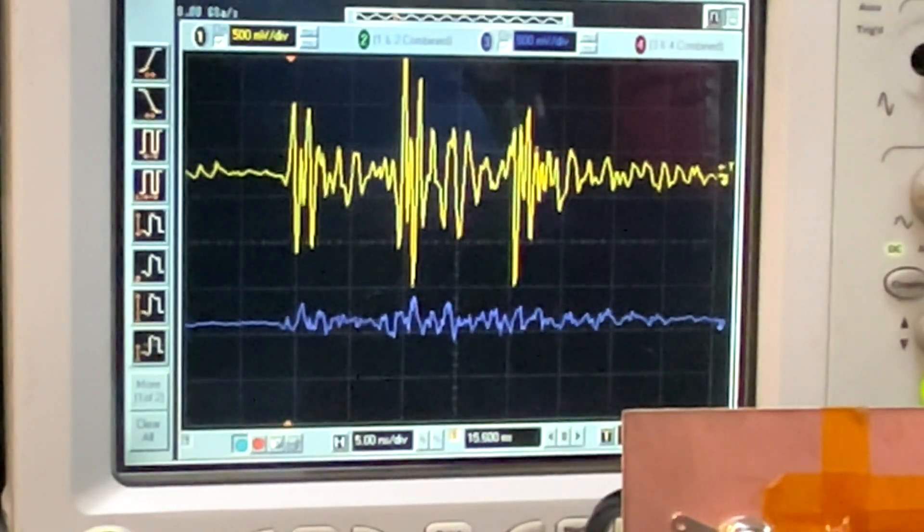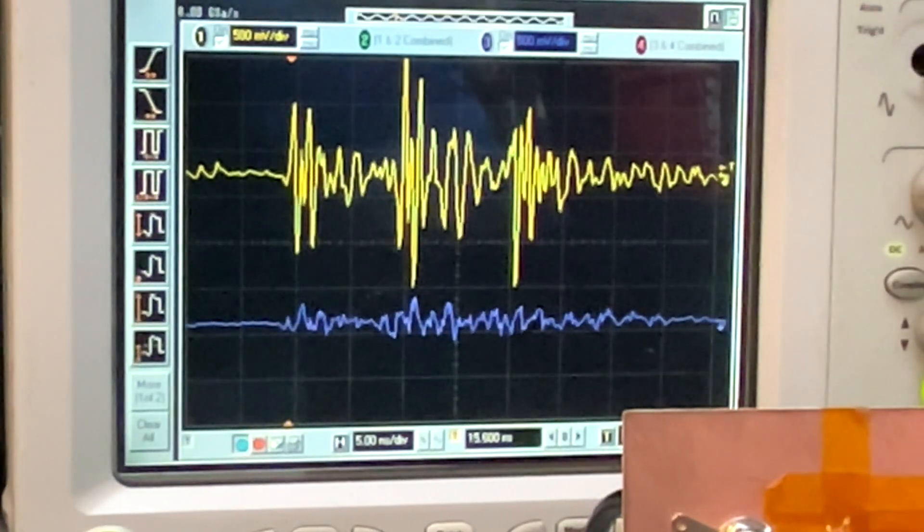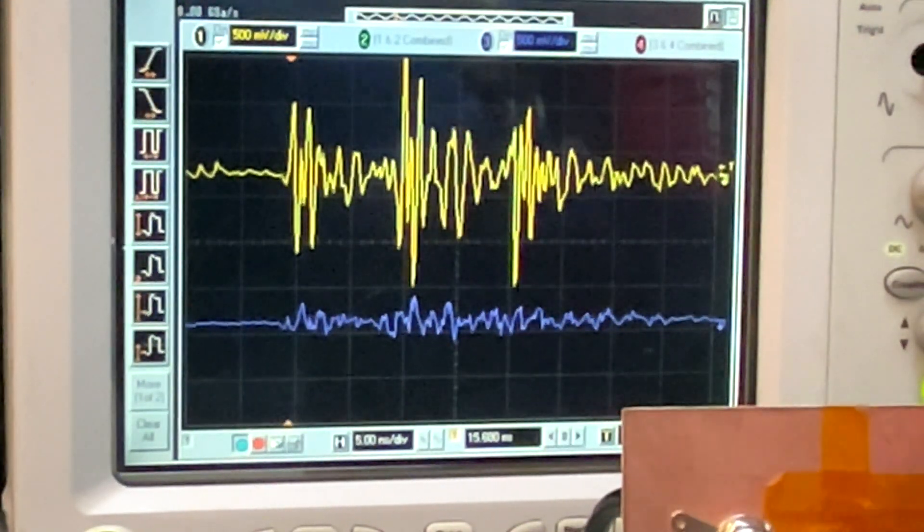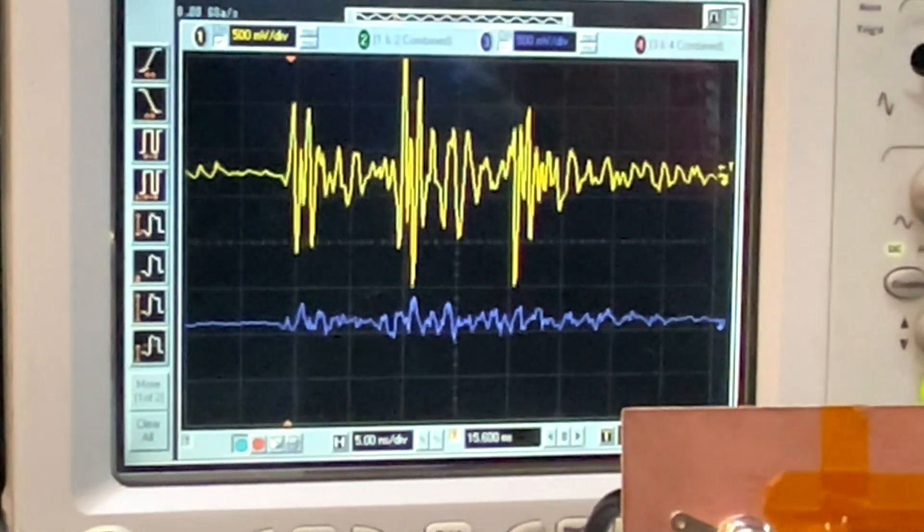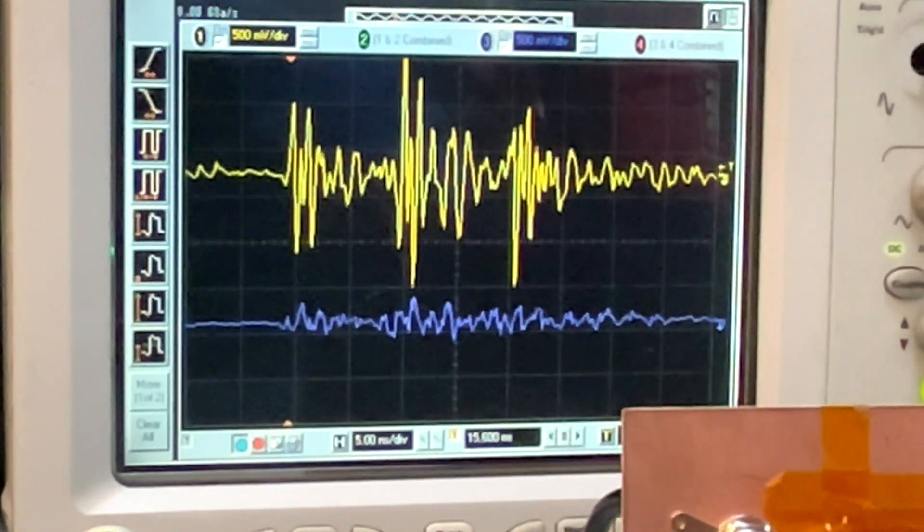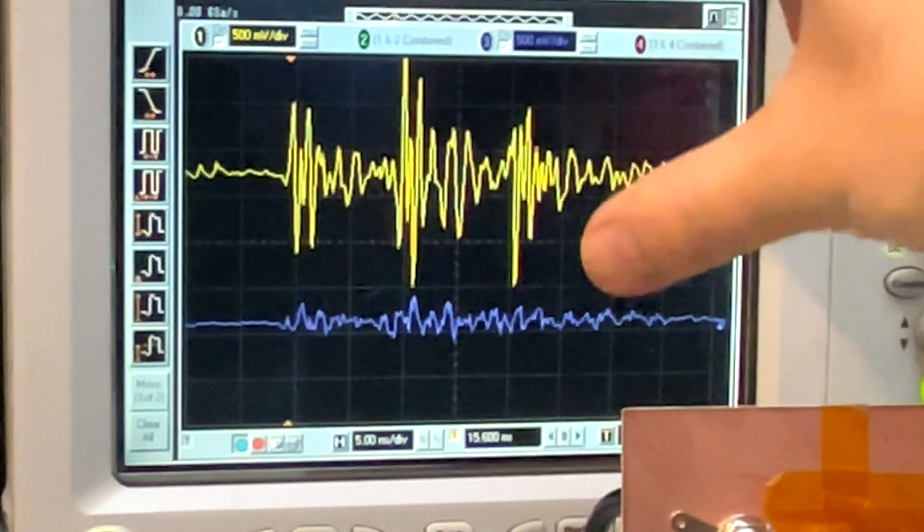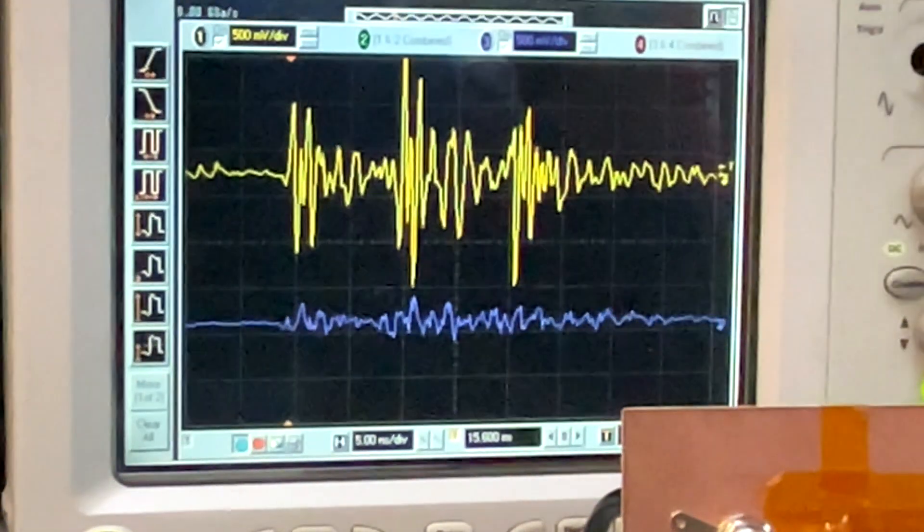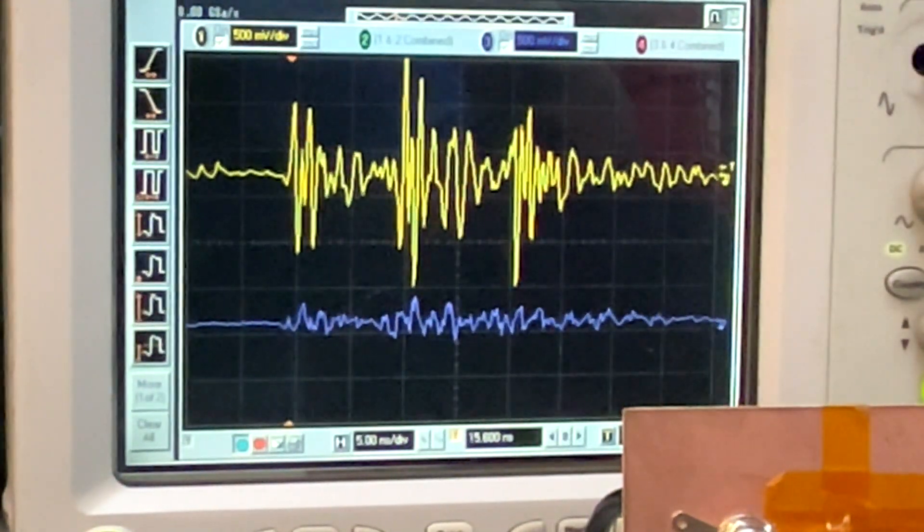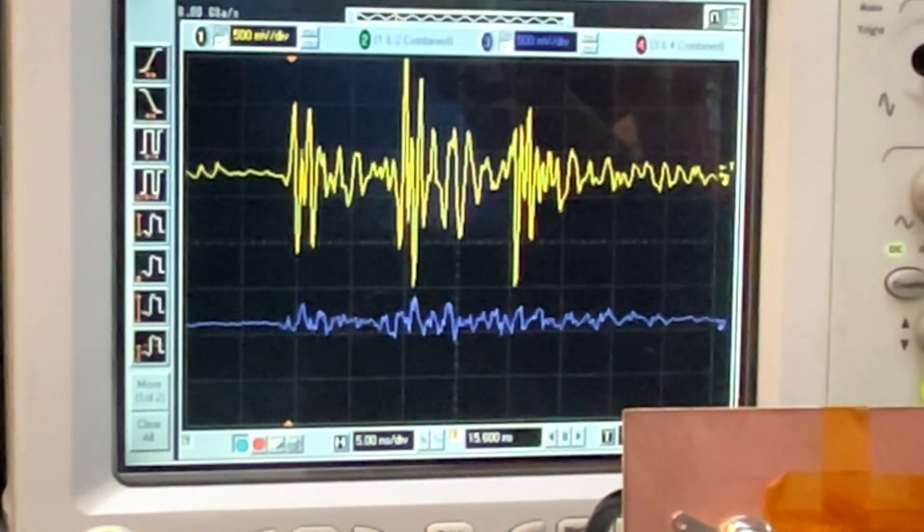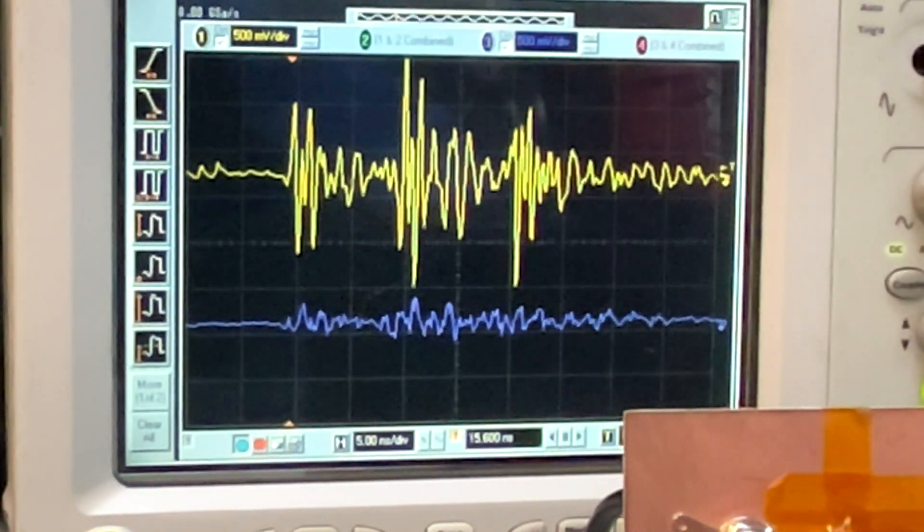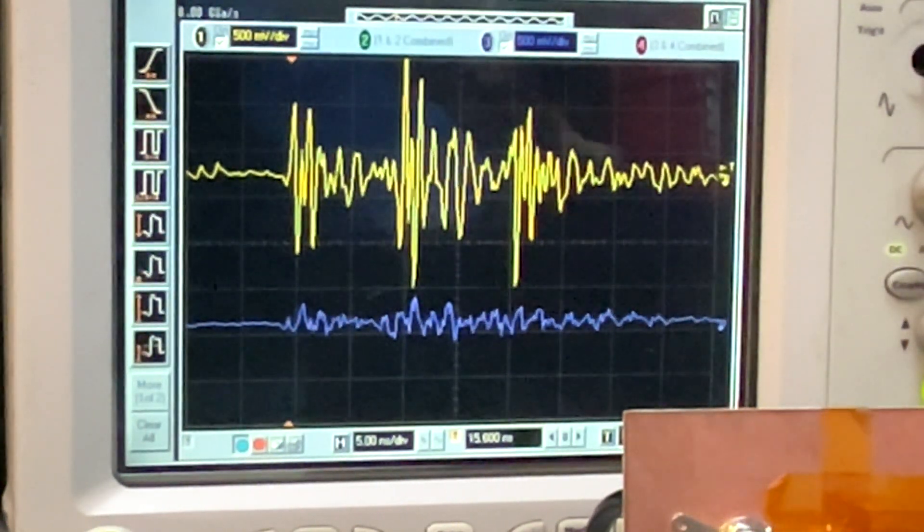But the trace where there's a gapped ground underneath it generates a voltage, you can treat this as an interference voltage, with a much larger amplitude compared with the ungapped ground. And you can easily see this is more than 10 times in terms of the voltage amplitude.